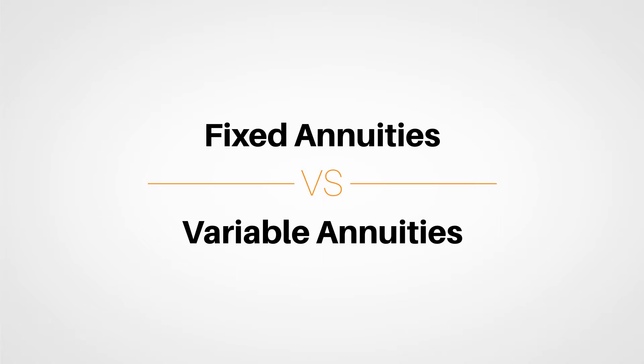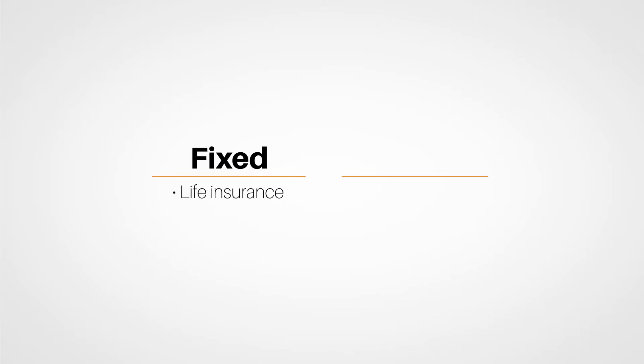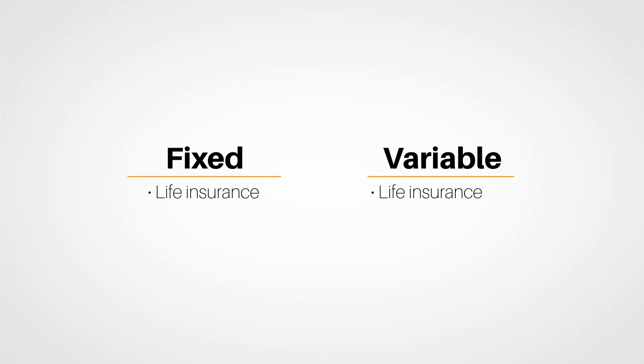It is important for you to understand the differences between fixed and variable annuities. For example, if you'd like to sell fixed annuities, you simply need a life insurance license. On the other hand, if you're selling variable annuities, you also have to get a securities license through the SEC and the Financial Industry Regulatory Authority. It's not just proper licensure needed for selling annuities — there are additional educational requirements that producers must complete prior to selling any type of annuity.